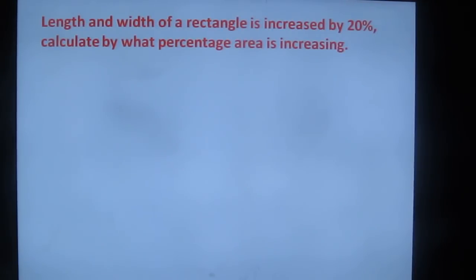First question: Length and width of a rectangle is increased by 20%. Calculate by what percentage the area is increasing. Assume that the base is 100%. Anything which is increased by 20%, 100% plus 20% will become 120%. What is 120%? 120 by 100, so 120 by 100 is 1.2.